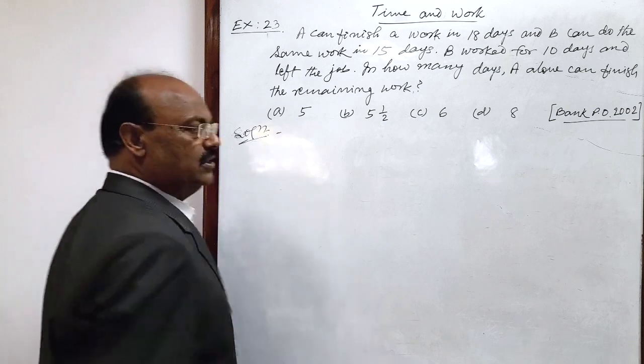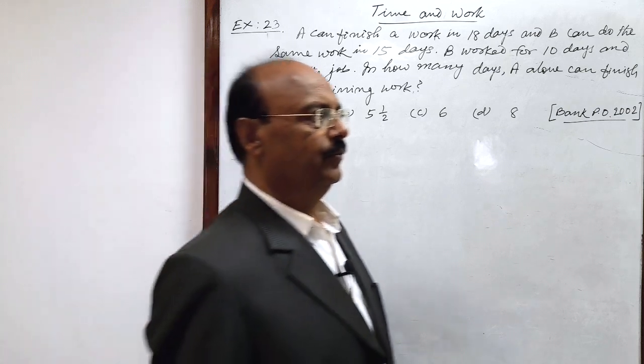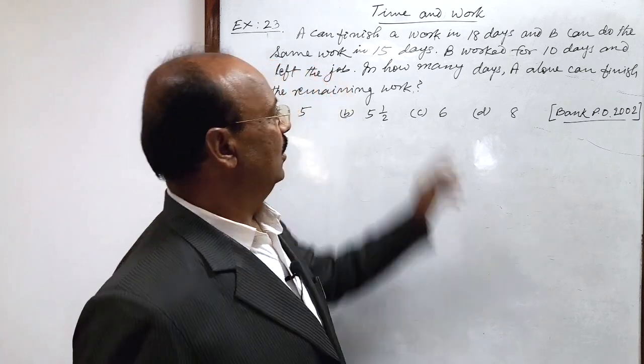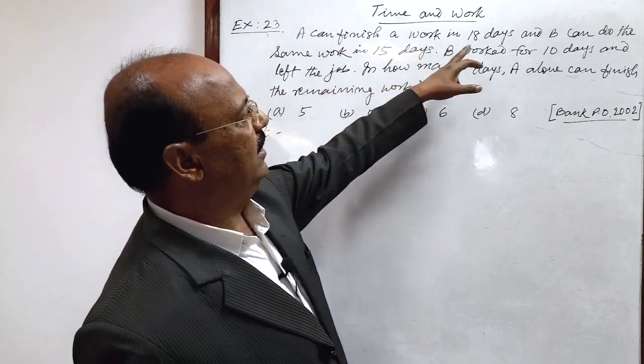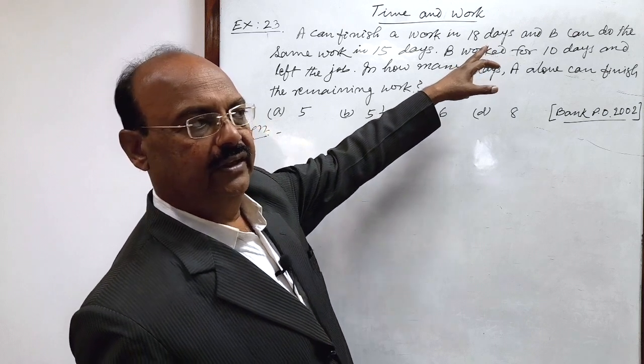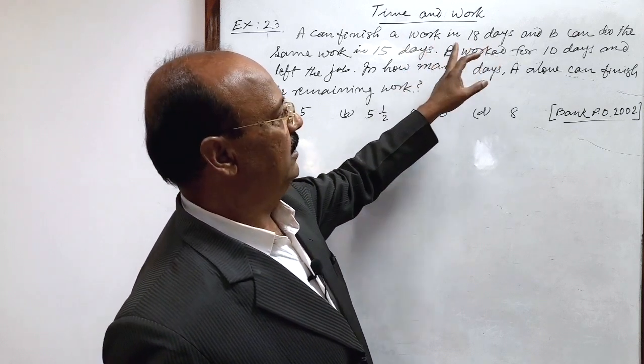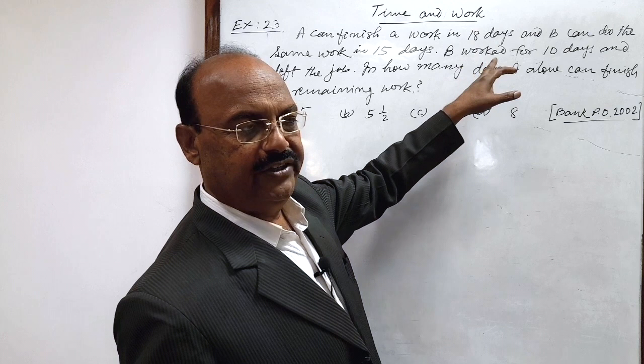Here first of all, we will try to find out one day's work of A and B. We are given A can finish a work in 18 days. So in one day, he will do 1 by 18 work.